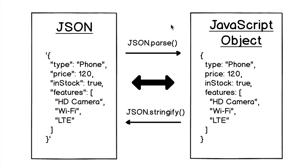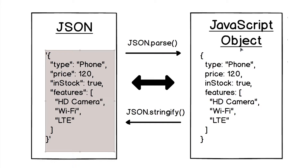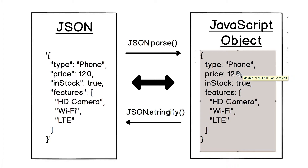Let's now discuss the difference between JSON and JavaScript object. JSON is a string, as we have just discussed. Here is an example. A JavaScript object is a variable type, represented as a set of key-value pairs surrounded by curly braces.